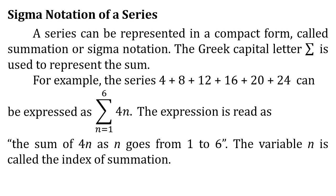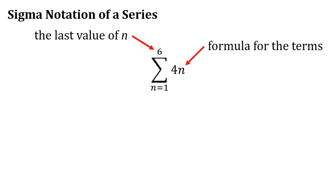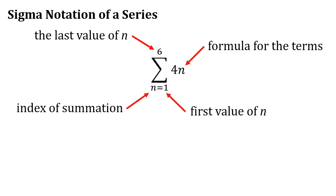The expression can be read as the sum of 4n as n goes from 1 to 6. Here, 6 is the last value of n, 4n is the formula for the terms, n is the index of summation, and 1 is the first value of n.